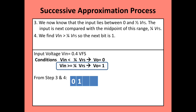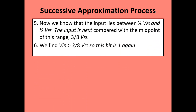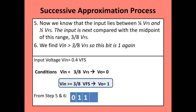Now we take the range between one-quarter VFS and one-half VFS as the full range and select its midpoint, which is three-eighths of VFS. We compare: is V-in less than three-eighths VFS, or greater than or equal to three-eighths VFS? Since 0.4 VFS is greater than three-eighths VFS, the second condition is satisfied again, and the output becomes 1.